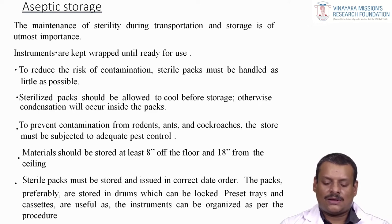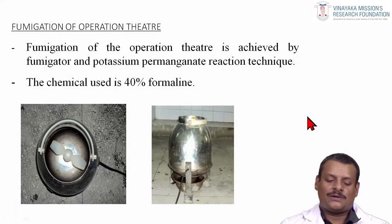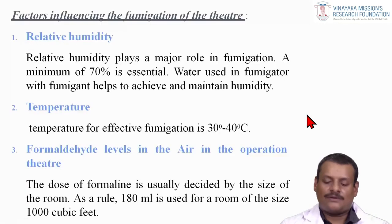Material should be stored at least 8 inches off the floor and 18 inches from the ceiling. Sterile packs must be stored and issued in correct date order. Packs are preferably stored in drums which can be locked, or preset trays or cassettes, which are useful as instruments can be organized per procedure. Fumigation of the operation theatre is achieved using a fumigator and potassium permanganate reaction technique; the chemical used is 40% formalin.